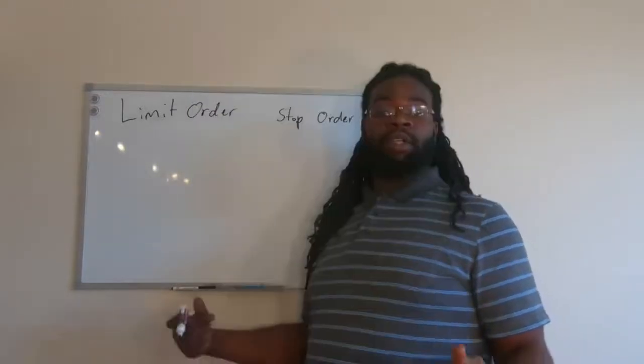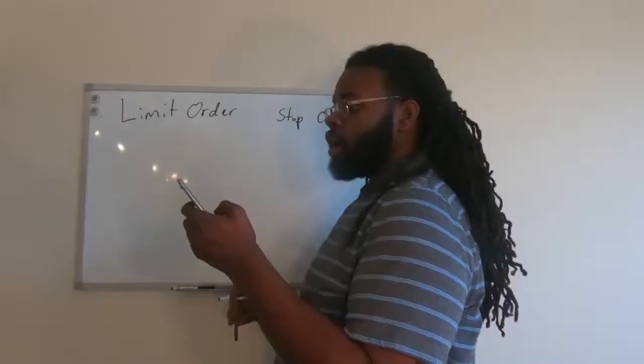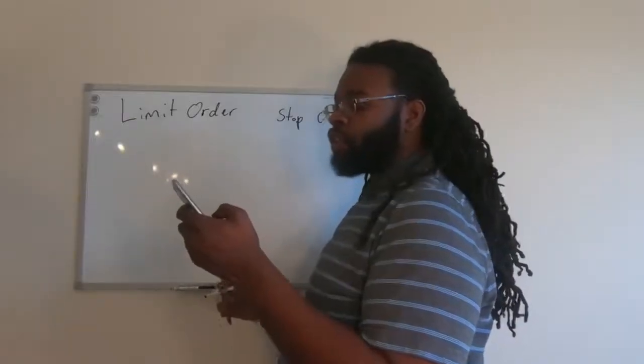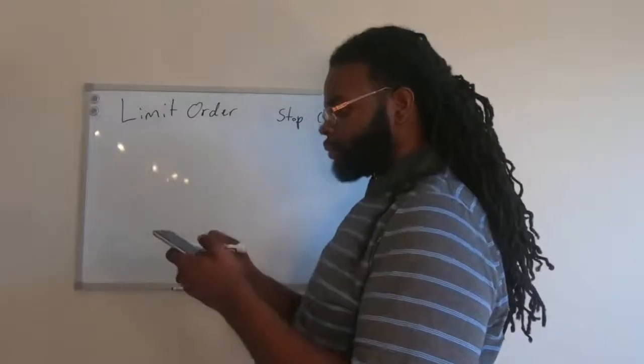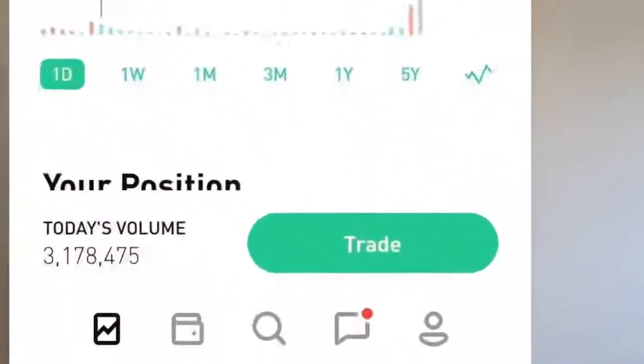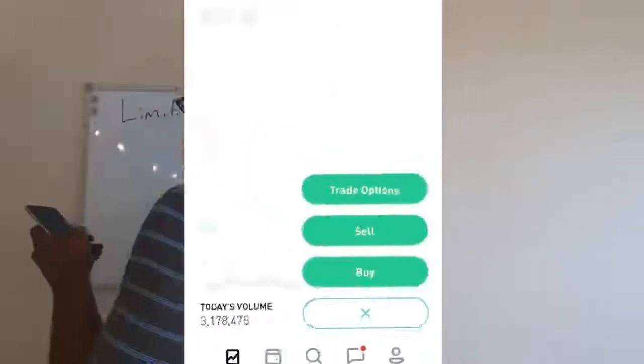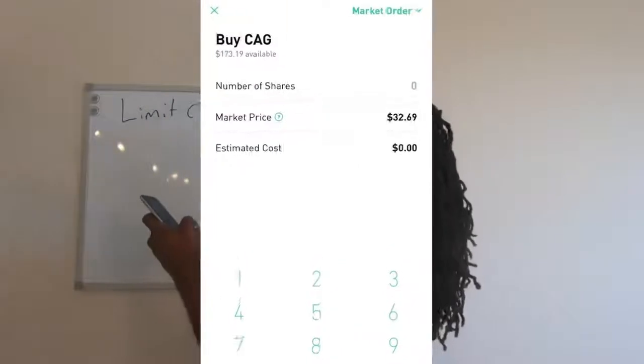I'm going to start off by showing you guys the limit and stop order options when it comes to buying a stock. First, from in the Robinhood app, I'm going to find the stock that I'm looking to trade. In this instance, it's going to be Conagra. I'm going to tap Trade. As I said, we're going to start with the Buy option, so I'm going to tap on Buy. In the top right corner you'll see where it says Market Order. You're going to click that drop-down menu.